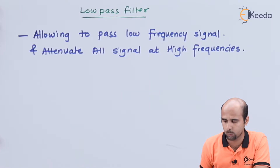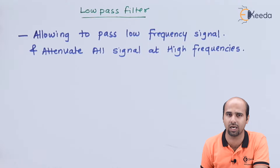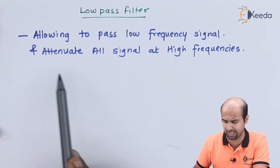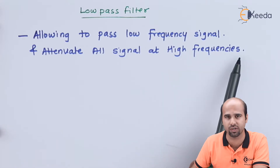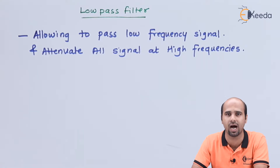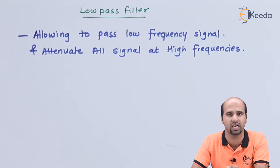First of all, we know what a filter is — it is allowing certain values of frequency signal and restricting certain values of frequency signal. A low pass filter indicates that we are allowing to pass signals through the device which are of low frequencies, that means allowing to pass low frequency signals and attenuating all signals which are at higher frequencies. If I am taking the words high and low, these are all relative terms. I have to decide that relativity with respect to a certain value of frequency, and that value of frequency is called the cutoff frequency.